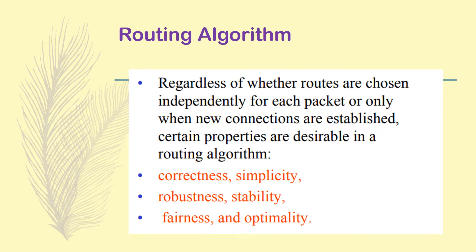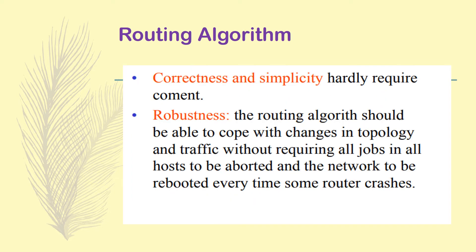Regardless of whether routes are chosen independently for each packet or only when new connections are established, certain properties must be taken into account. The most desirable features are correctness and simplicity, robustness and stability, and fairness and optimality. Simplicity is important because route estimation itself can become very complex, time-consuming, and increase system complexity. Correctness is the most prime feature, since the decision of which route to take determines whether the packet reaches its destination.